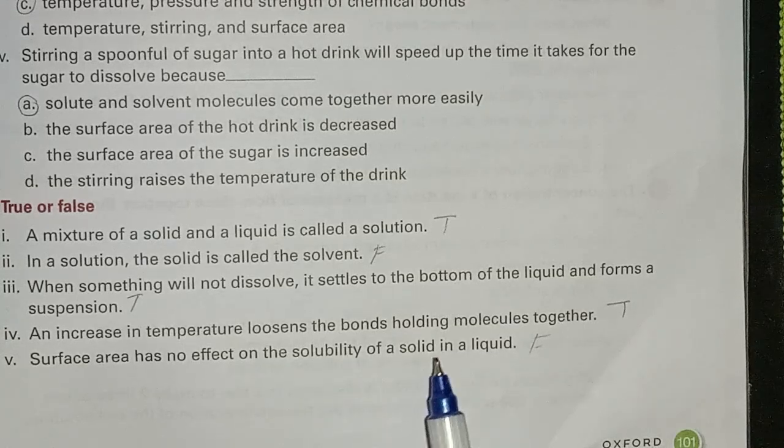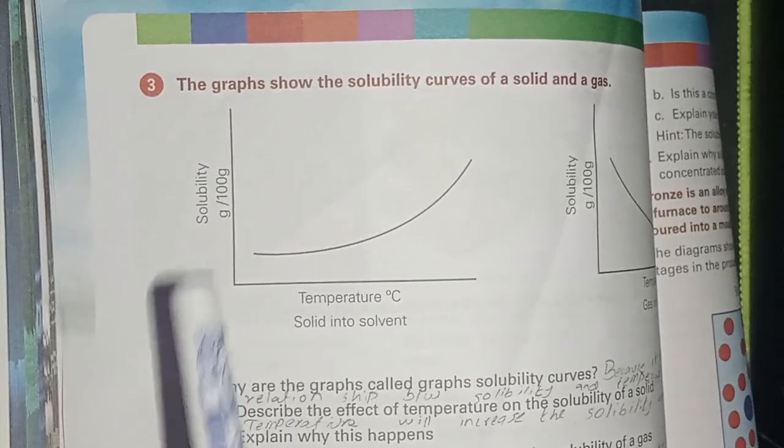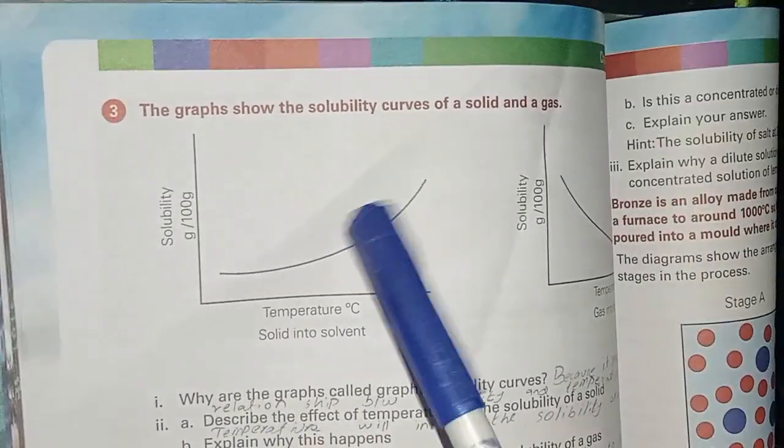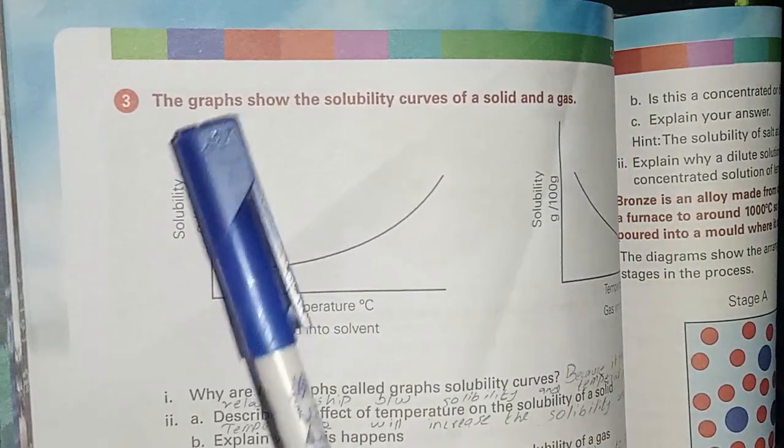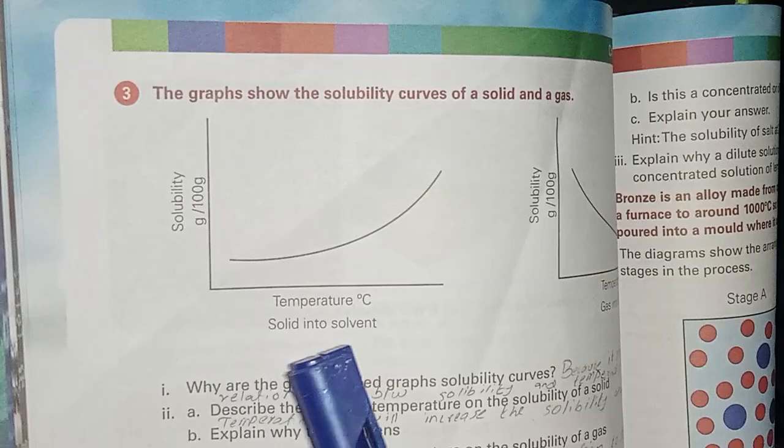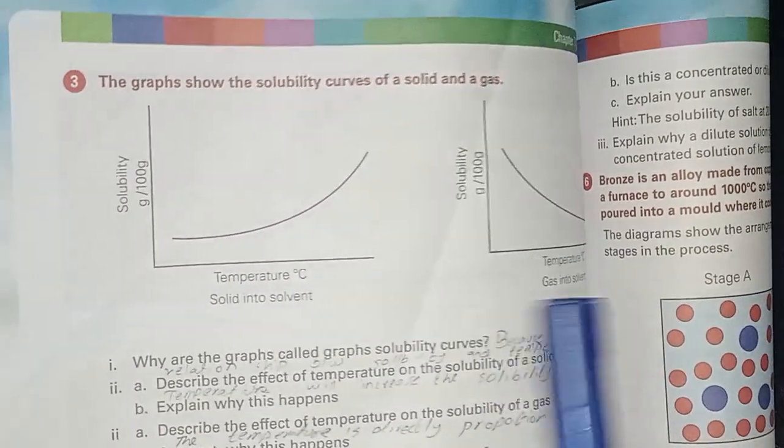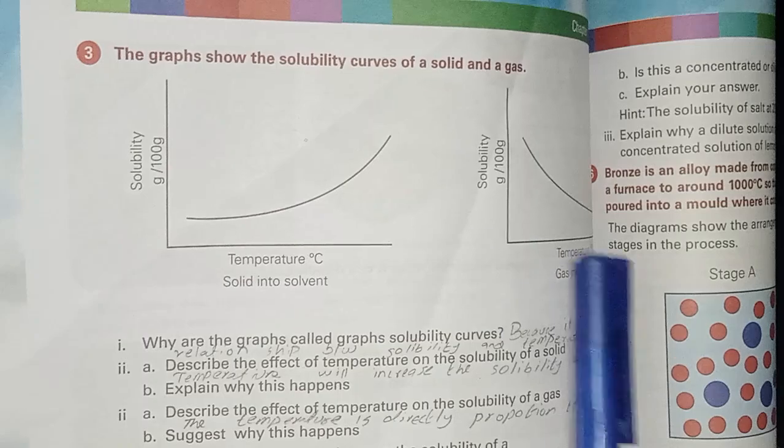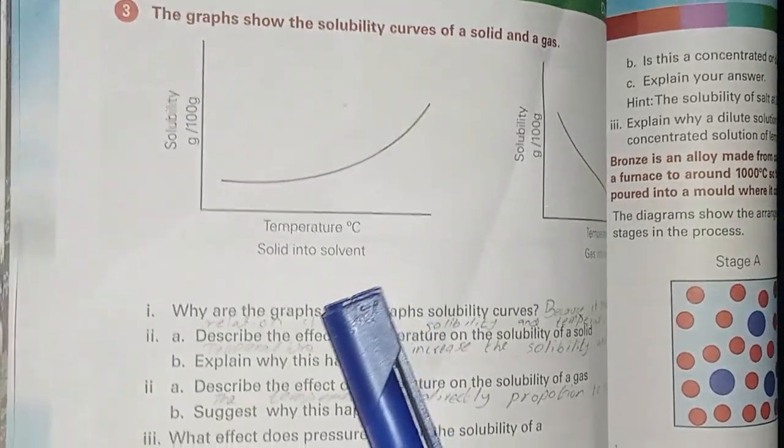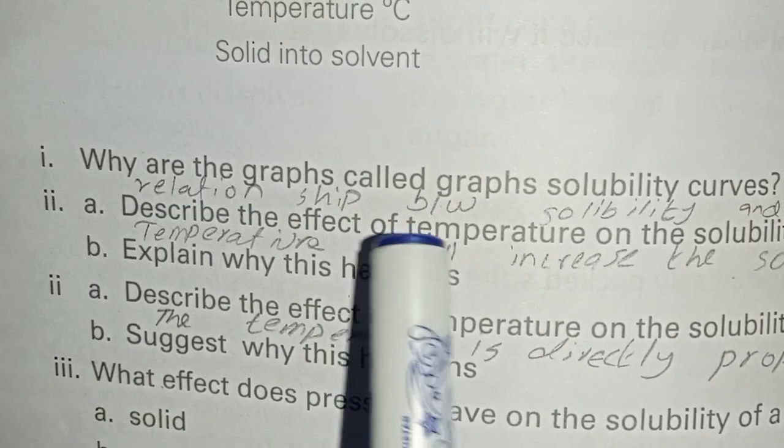Next page, page number 102. Question number three: the graphs show the solubility curves of a solid and a gas. Here we have two pictures, one is solid in a solvent, this one is gas into solvent. Temperature is given for both and the solubility rate is also given. The question is: why are the graphs called solubility curves?